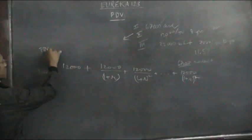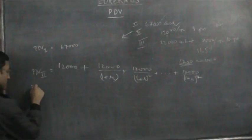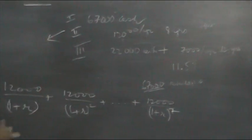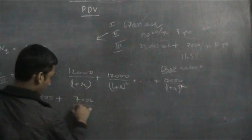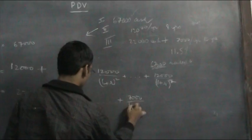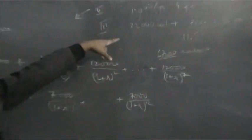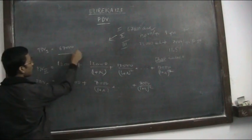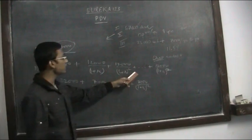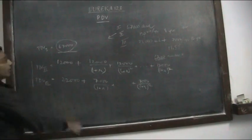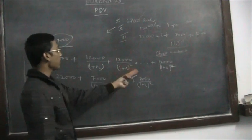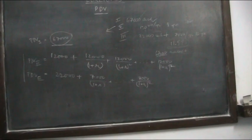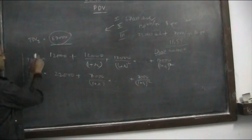The PDV of the first option is $67,000. The PDV of the second option will clearly be less than $67,000. The PDV of the third option needs calculation. The interest rate is 11.5%. We put r = 11.5% and calculate both PDVs. We will see whose PDV is the least and select that option.